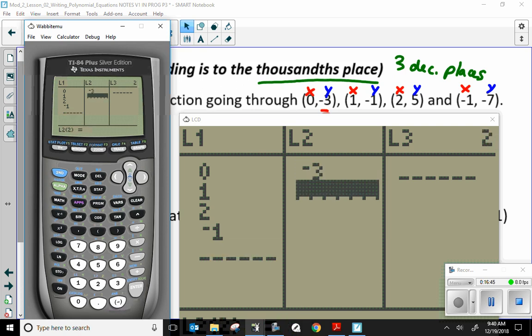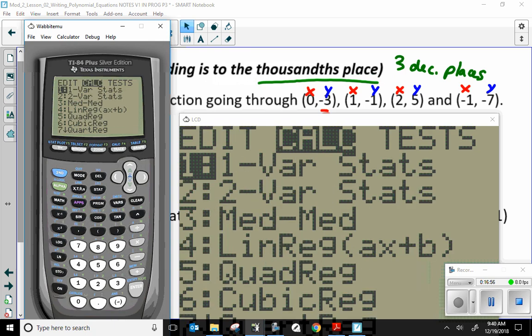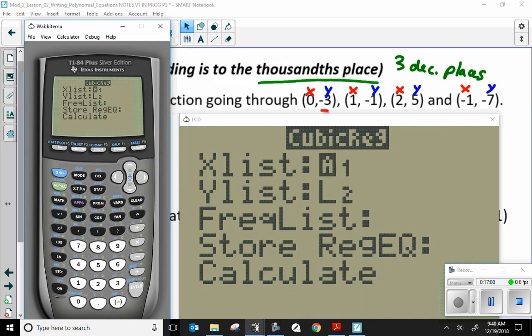Did I do that right? They all appear to be right. Well, that's stat. Calc a cubic, which is number six. So, number six. Boom. Bang.